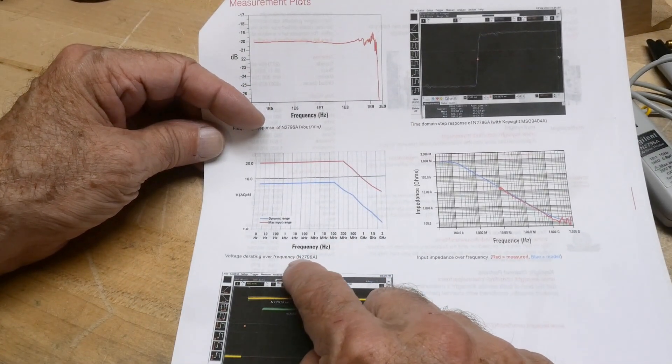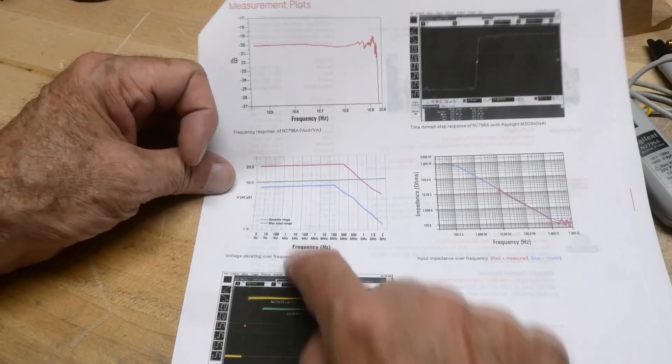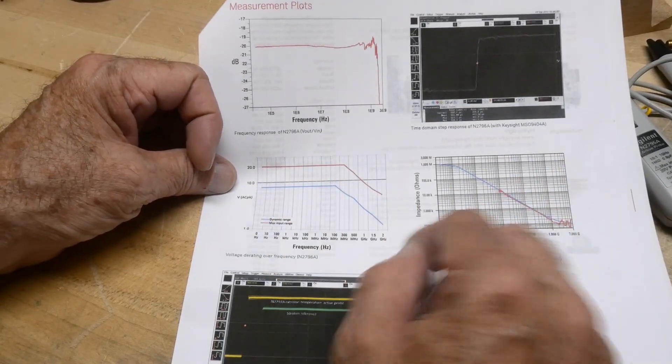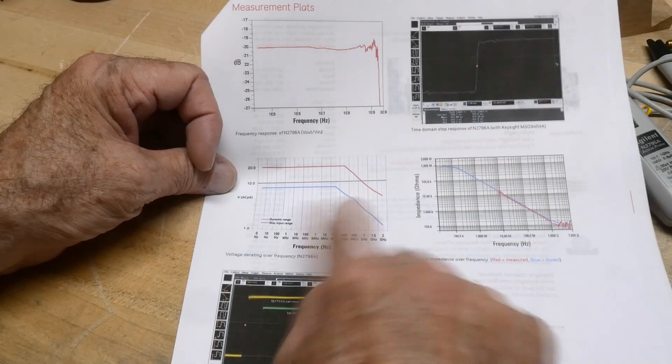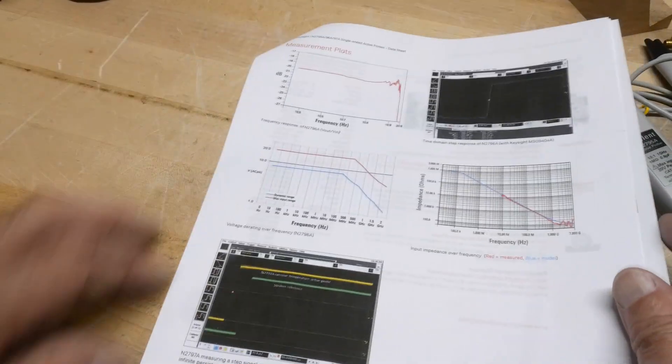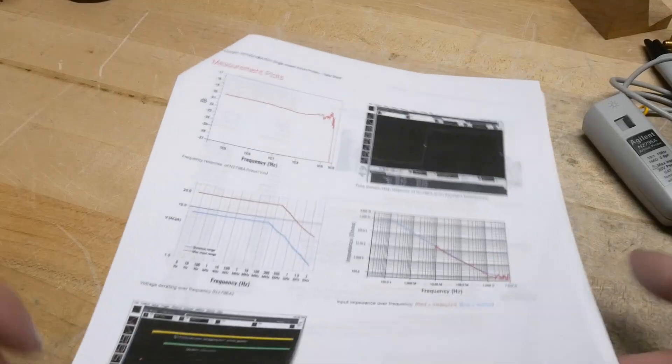Here's some voltage deratings, maximum voltages. Like here's a 20 volt max derating, max voltage, except you come out to a gigahertz, it's running down here around 5 volts. So yeah, don't put a lot of voltage into these things. Be careful with them.